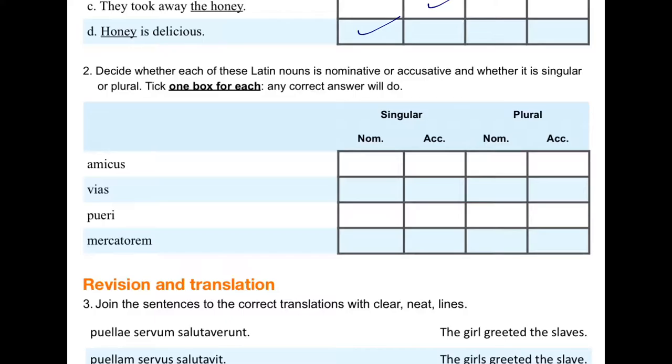Let's put them in. Amicus is nominative singular. Vias, that as there is the accusative plural of the first declension. Pueri, the I there, like we, is nominative plural. And our old friend, the M there on the end, is the accusative singular, this time the third declension. That's our second section done.